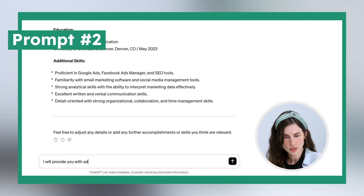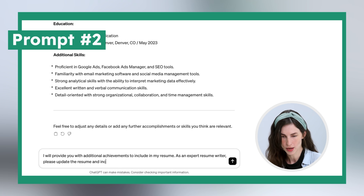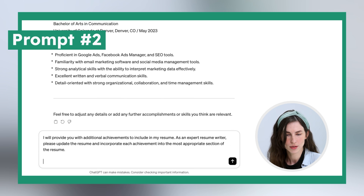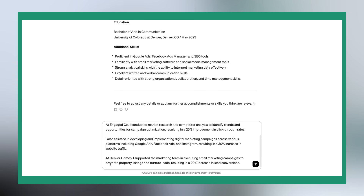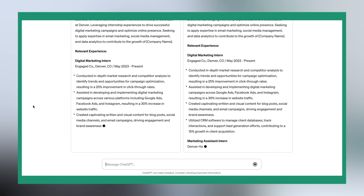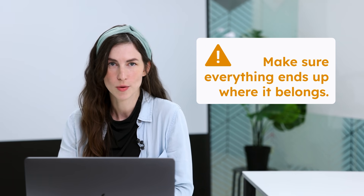Prompt 2: 'I will provide you with additional achievements to include in my resume. As an expert resume writer, please update the resume and incorporate each achievement into the most appropriate section. Include more achievements here, specifying which role each experience comes from.' As long as you're specific enough, ChatGPT should know where to put each detail, but check to make sure that everything ends up where it belongs.